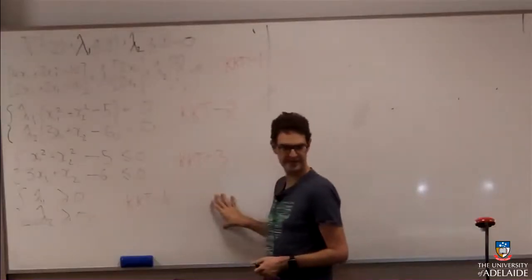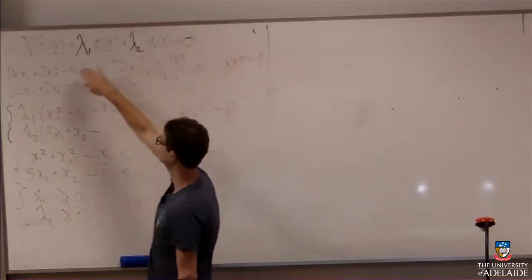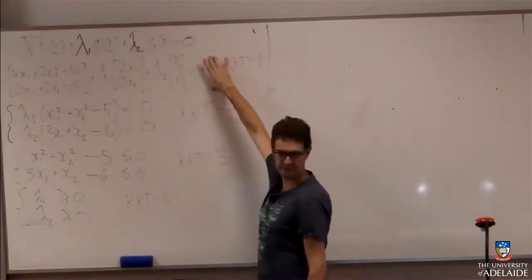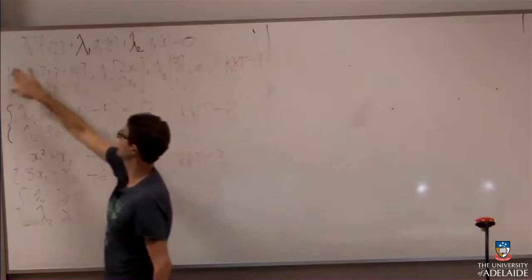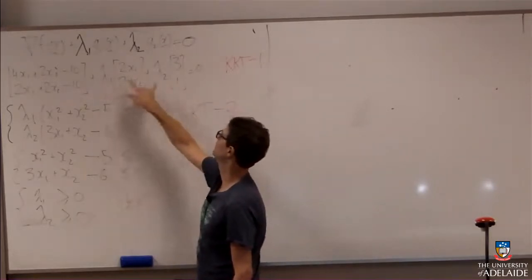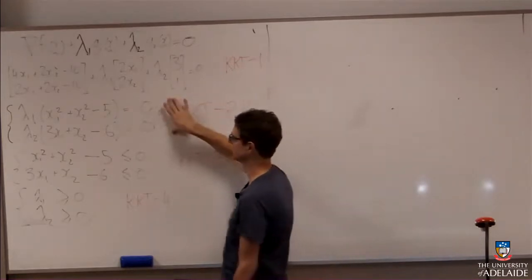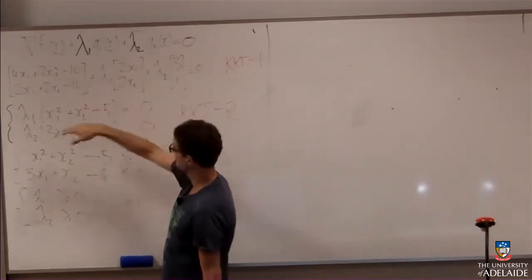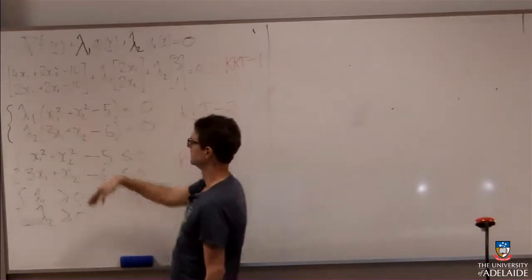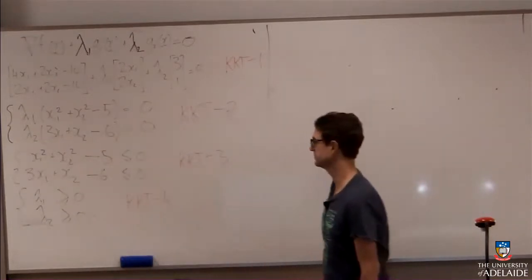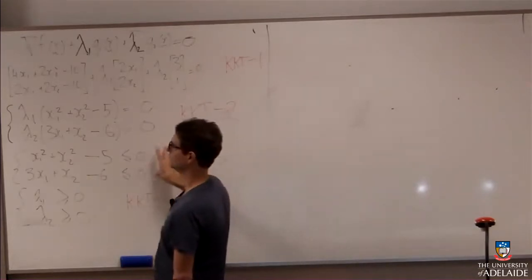KKT1 is: gradient of f plus the sum of λ times ∇gᵢ equals zero. With our particular functions, there's the gradient of f, gradient of g₁, and gradient of g₂, multiplied by two Lagrange multipliers, all equal to zero. The complementary slackness conditions say either constraint g₁ is activated and λ₁ is positive, or it won't be activated and λ₁ equals zero — and the same for the second constraint.